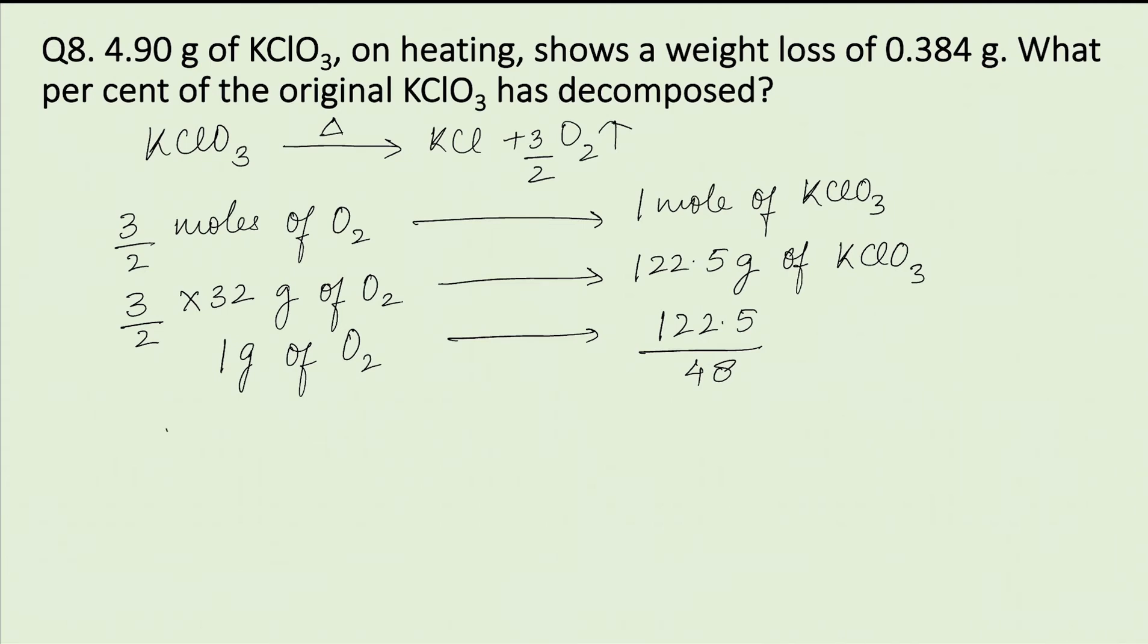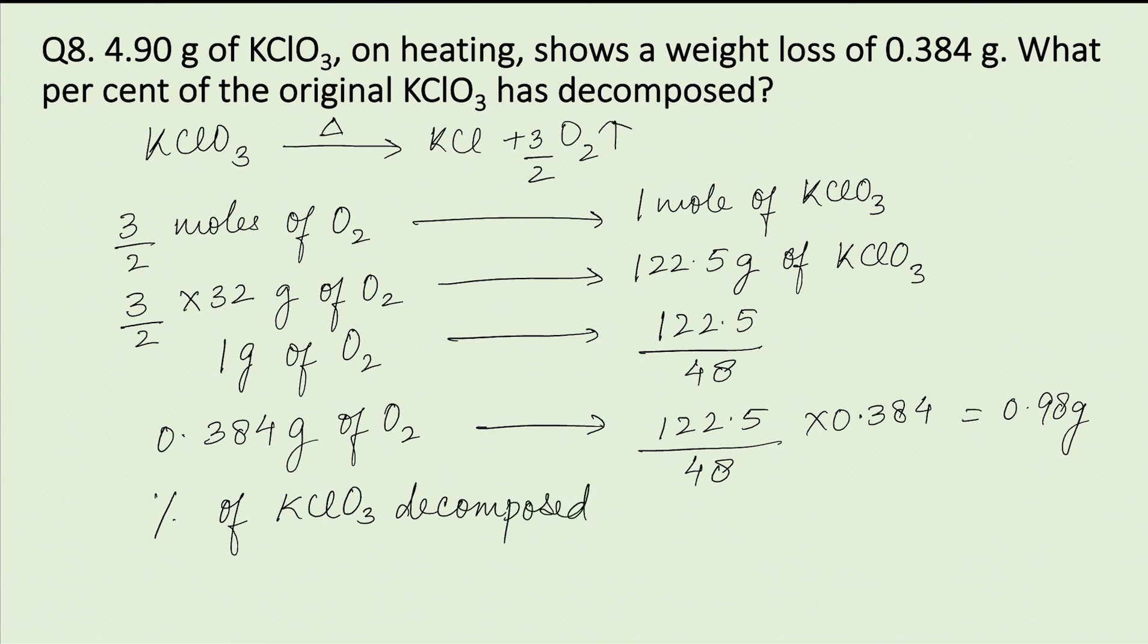So 0.384g of oxygen is produced from 0.98g of KClO3. Therefore, the percentage of KClO3 decomposed equals